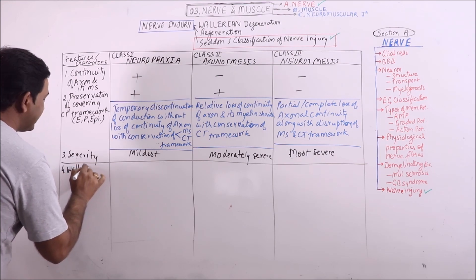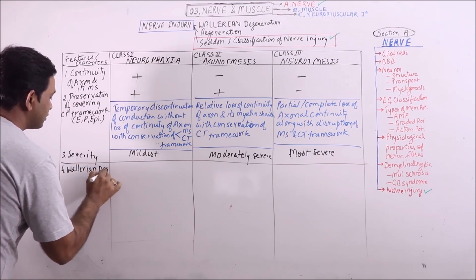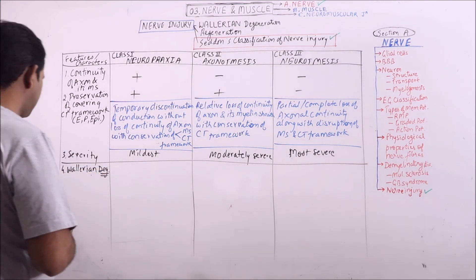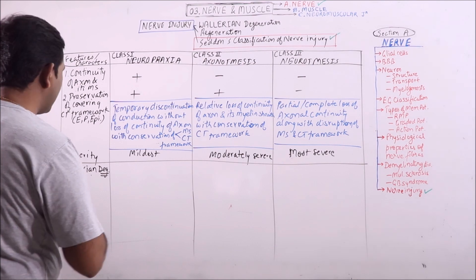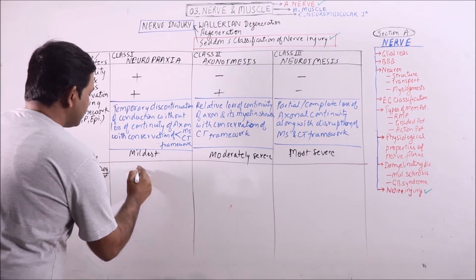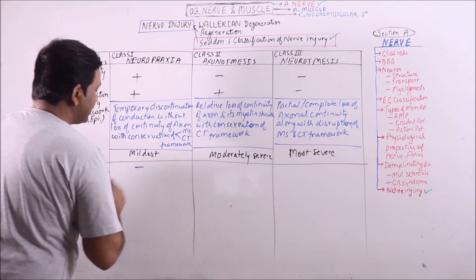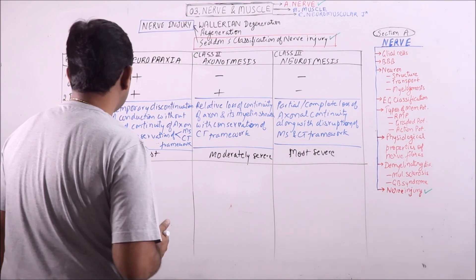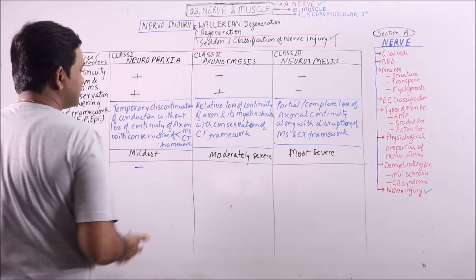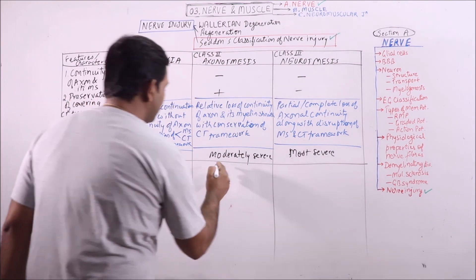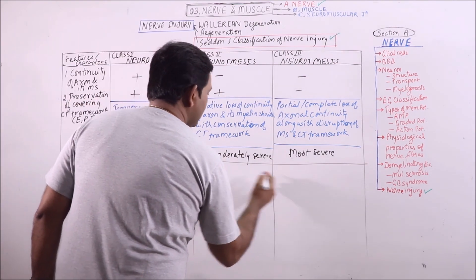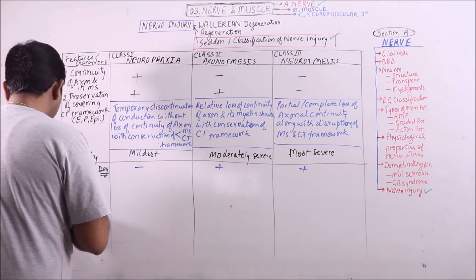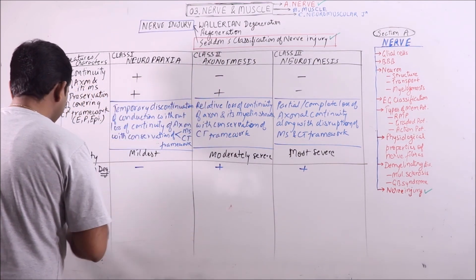If I discuss Wallerian degeneration in the distal part, then no Wallerian degeneration will occur in neuropraxia because axonal continuity is maintained. In both axonotmesis and neurotmesis, Wallerian degeneration will occur.